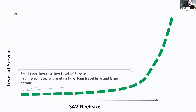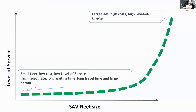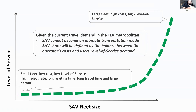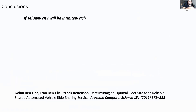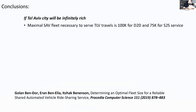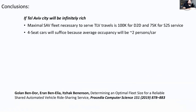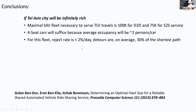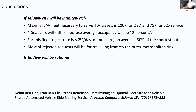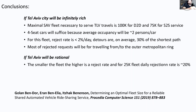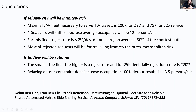In conclusion, a small shared automated vehicle fleet yields a low level of service, but a large fleet means high costs — the balance is somewhere in between. We believe SAVs will not become the ultimate transport mode, which is why we need metro and other public transport. For Tel Aviv: 100,000 vehicles would be needed for a full door-to-door service, and 75,000 for a stop-based service, but that's not viable. Four seats would suffice in Tel Aviv since occupancy is close to two, while Jerusalem would need six seats. If Tel Aviv is rational, the fleet would be around 25,000 vehicles with a rejection rate of about 20%.